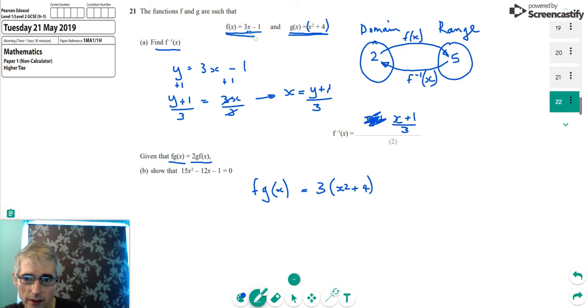and then I've got minus 1 from my f of x function there. So minus 1, and if I multiply that out, I would get 3x squared plus 12, take away 1. So that's simply multiplying the 3 into the brackets. And then that would give me 3x squared plus 11.